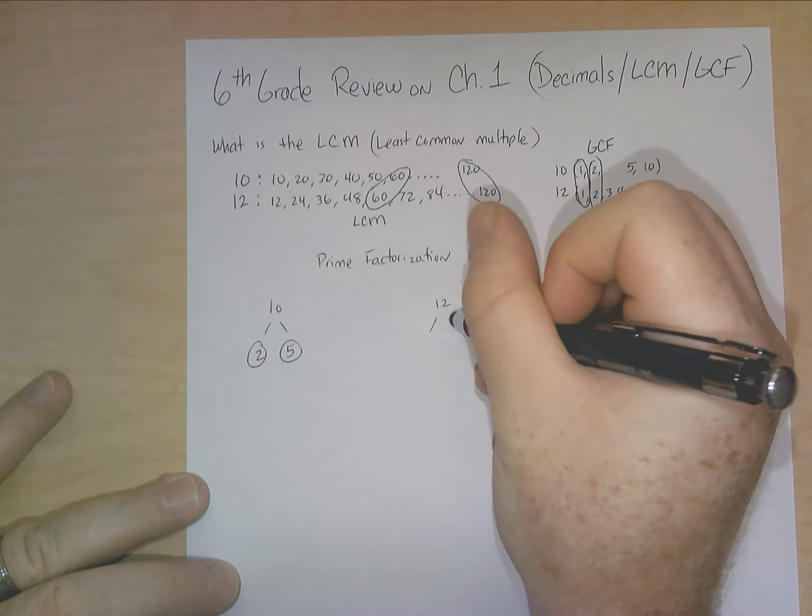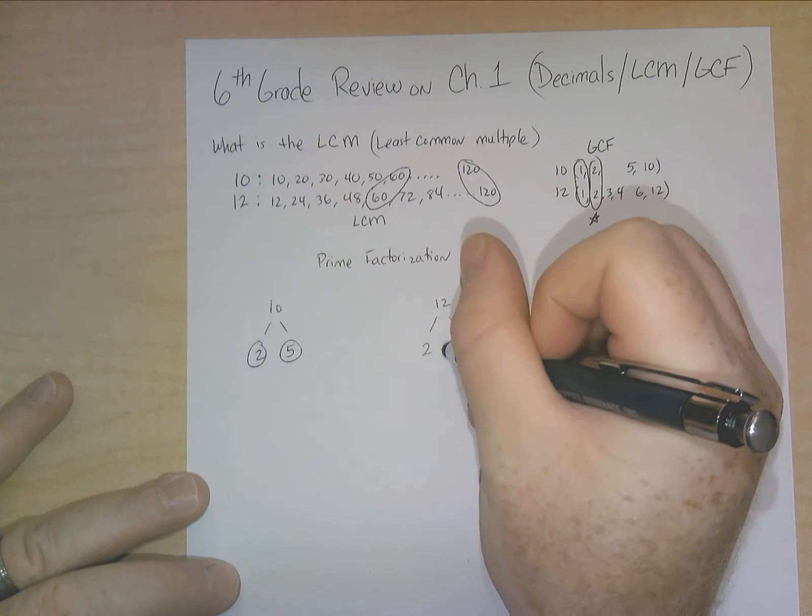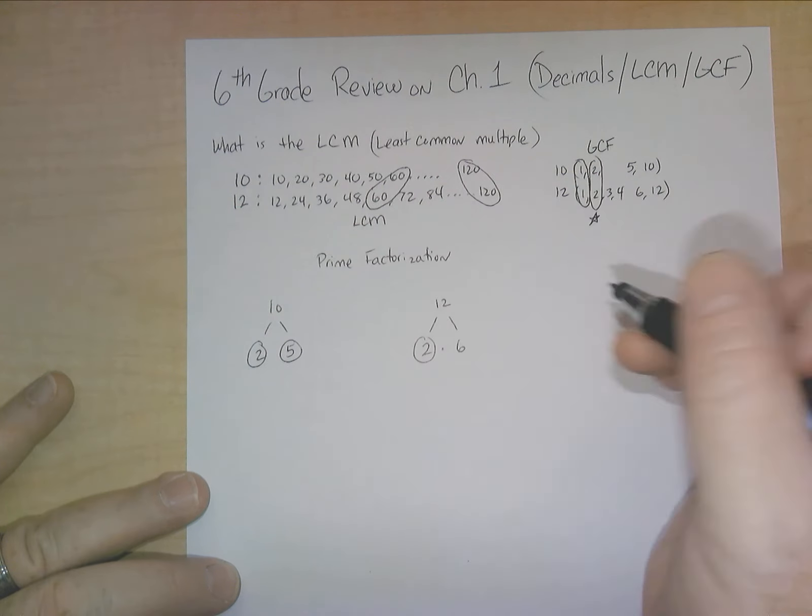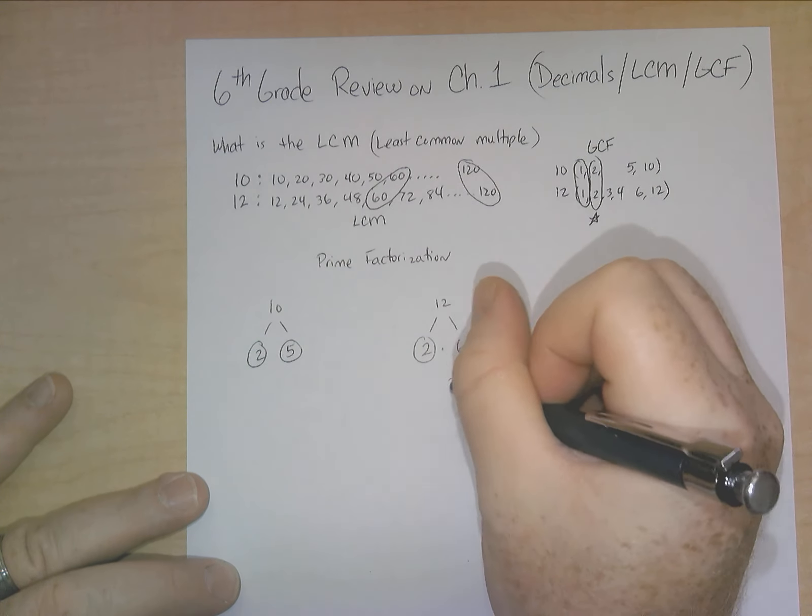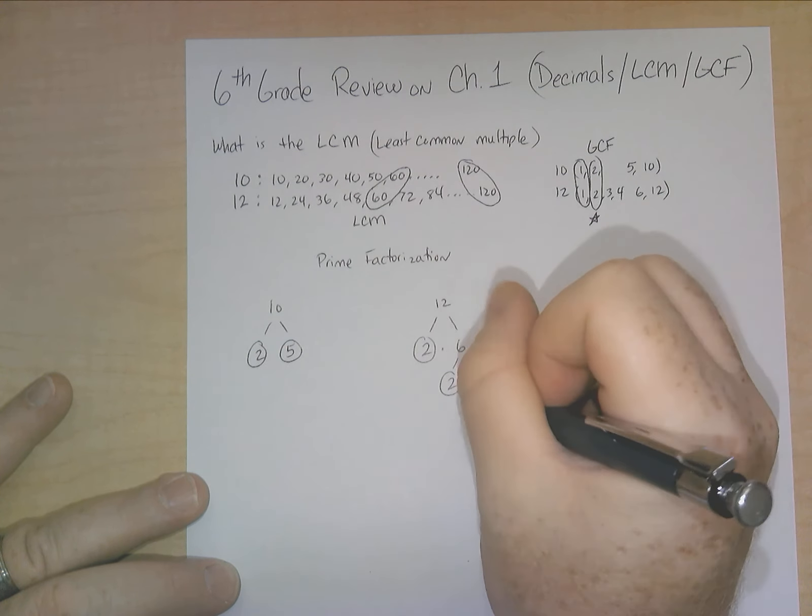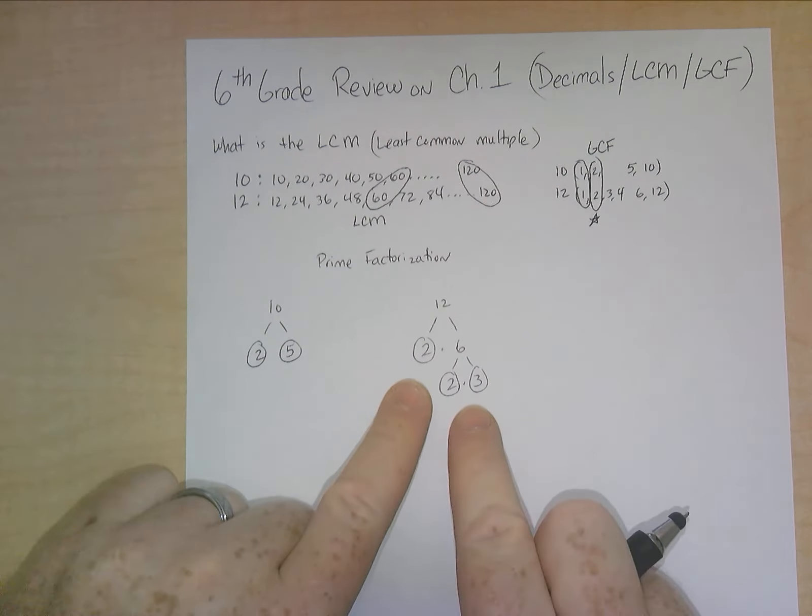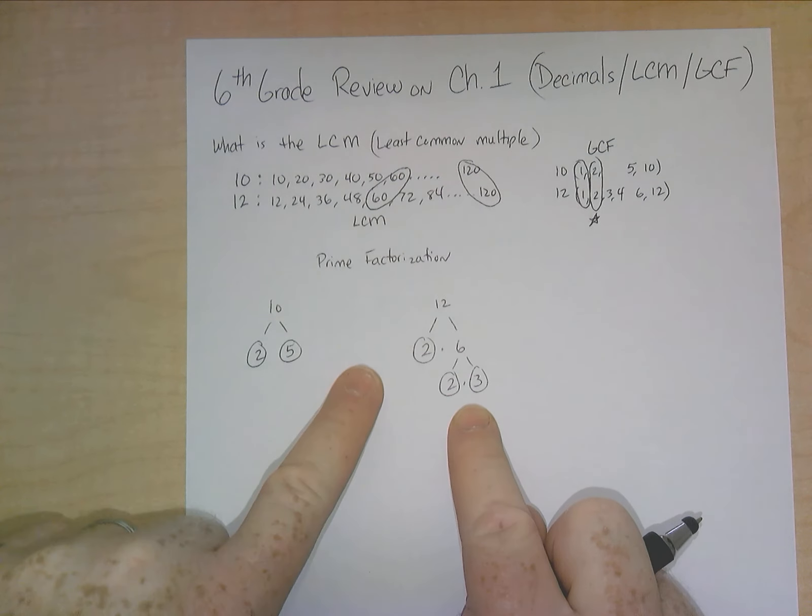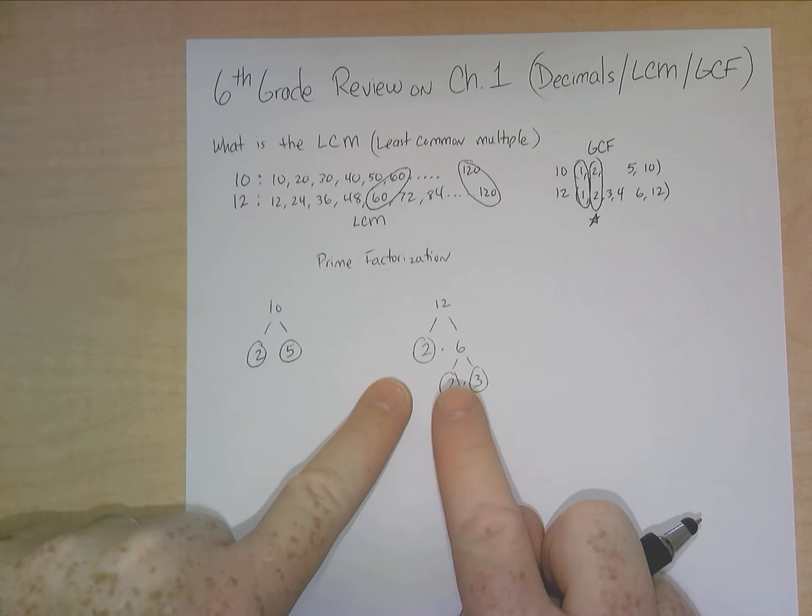For 12, you break it down. Let's say we get 2 times 6. Well, 2 is prime, but 6 is not. 6 is still composite. You can break that down to 2 and 3. Now that we've reached all our prime numbers, the prime factorization of 10 is 2 and 5. And the prime factorization of 12 is 2 times 2 times 3.